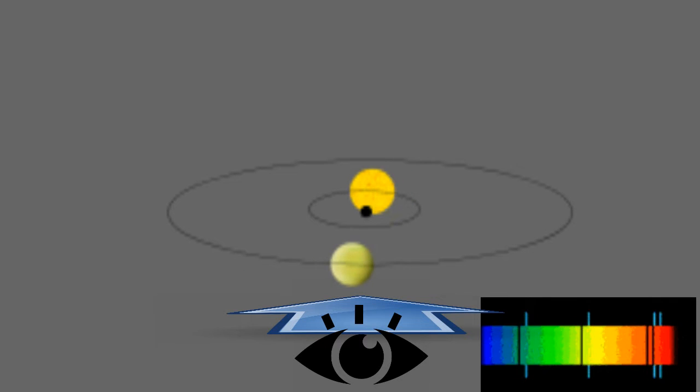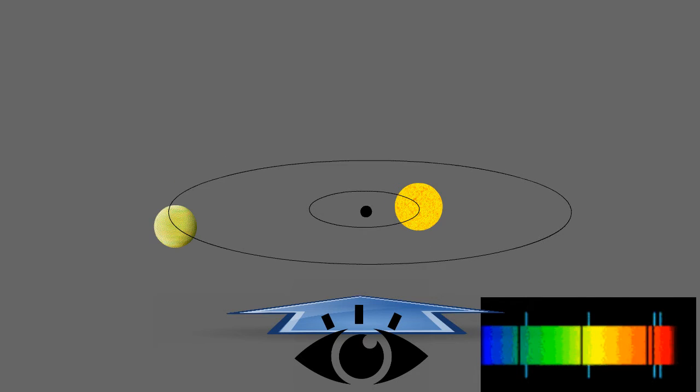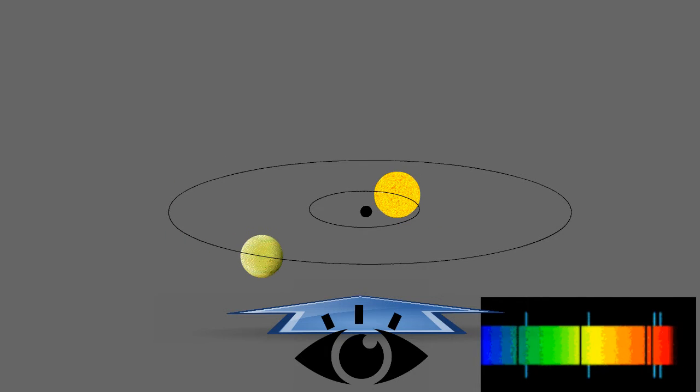On the right side of the animation, we can see that when a star moves away from us, the wavelength of the light is becoming redder. This means the wavelength of the light is becoming longer. We call this the redshift.